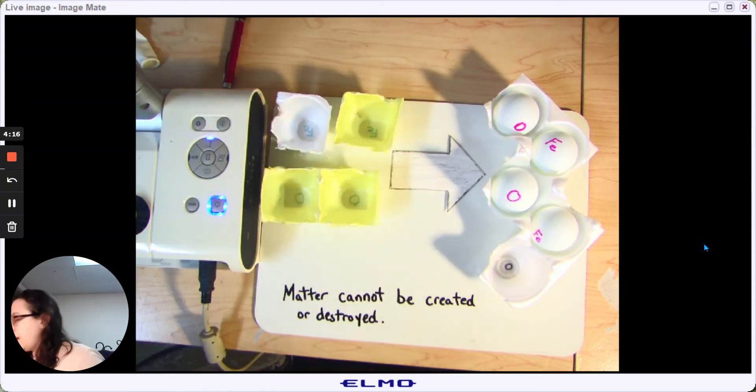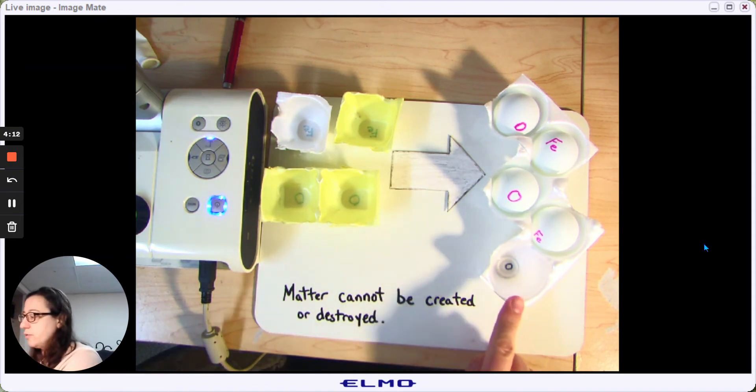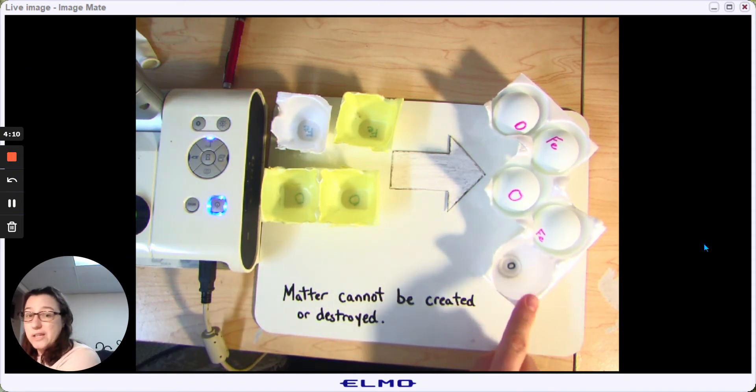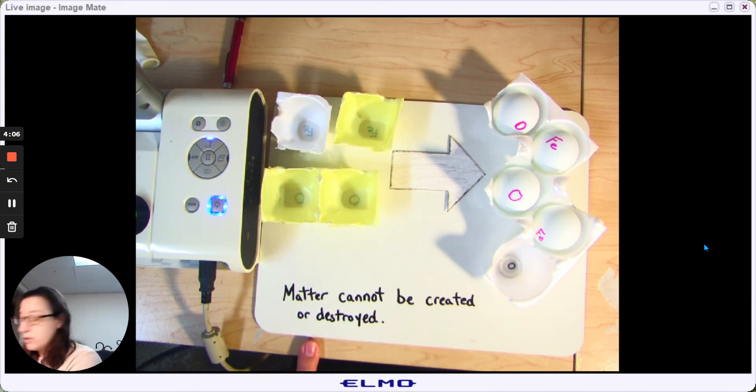And I don't have enough oxygen to finish this rust molecule, but I can't just suddenly create an oxygen here because we have a rule in chemistry that matter cannot be created or destroyed. It's always the same amount, just changing place.